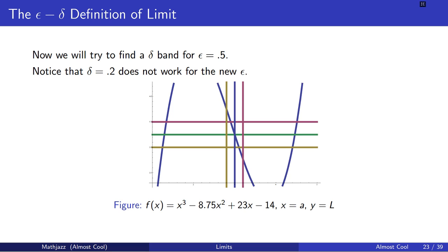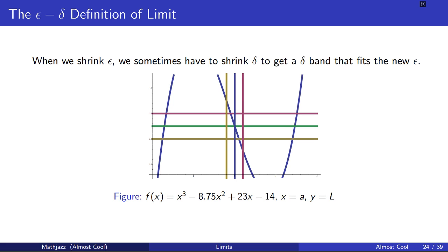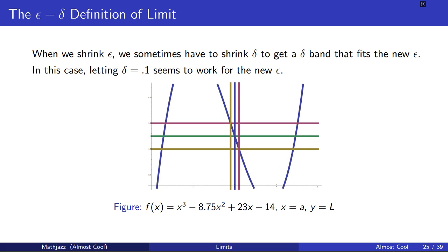If I reduce my delta to 0.1 and shrink it down, it seems to work again. My function is now in the box bounded by the two yellow lines and the two purple lines — whenever I am between the vertical lines, my function is between these two horizontal lines. So I found a new delta for the new epsilon that seems to work.